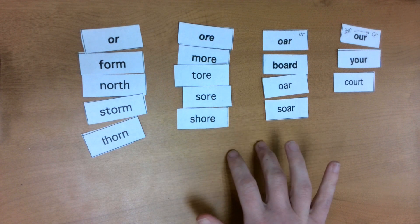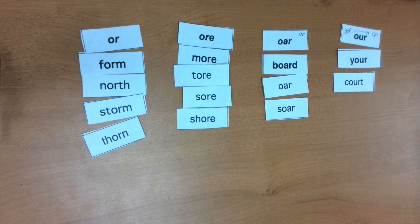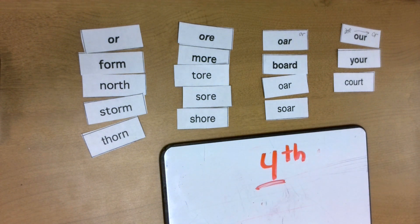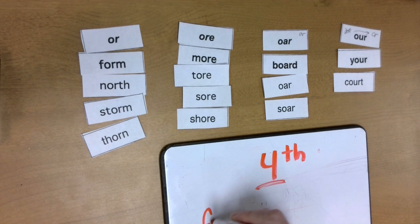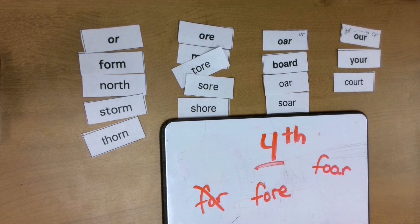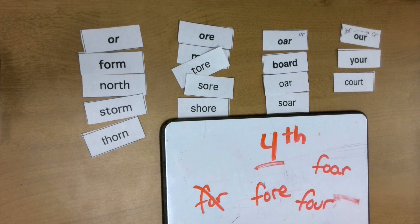My next word is FOURTH. Tap that out with me. FOURTH. When I think about the meaning of the word — not first, not second, not third, but FOURTH — I would expect the word 'for' to be in there. So how do you spell 'for'? We spell that like this, so that can't be it. That's a homophone. There's FOUR — the number word — and then we've got our TH at the end: FOURTH.